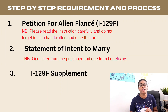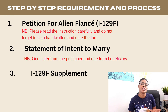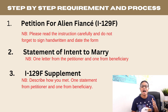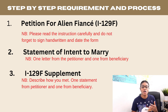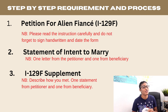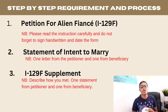You also need to provide I-129F supplements — one statement from the petitioner and one from the beneficiary — describing how you met. Think of it like a story: tell them how you met, how the relationship has grown, and everything about the relationship up to this stage. Don't include overly romantic or private information, but make it convincing and genuine.